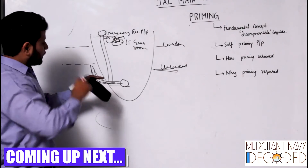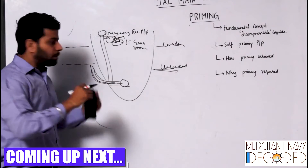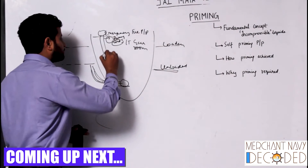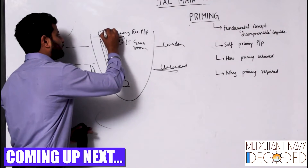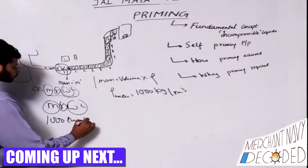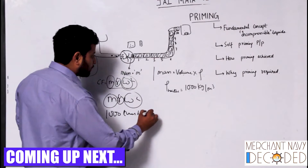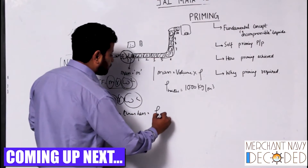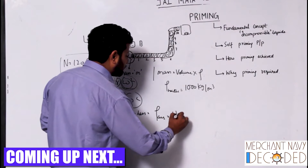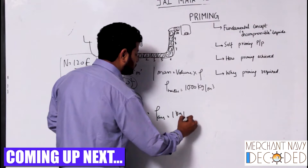This priming pump rotates with the pump and moves all the air, slowly sucking in water, and then water comes and goes over here. Why? Because the density of air is 1 kg per meter cube.